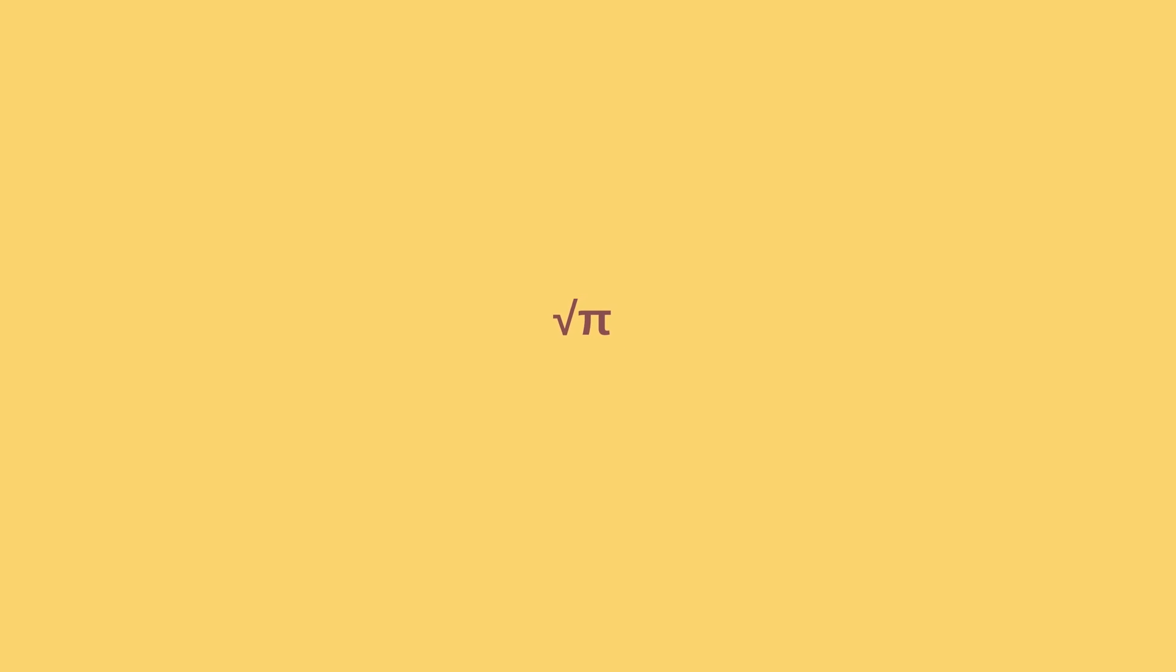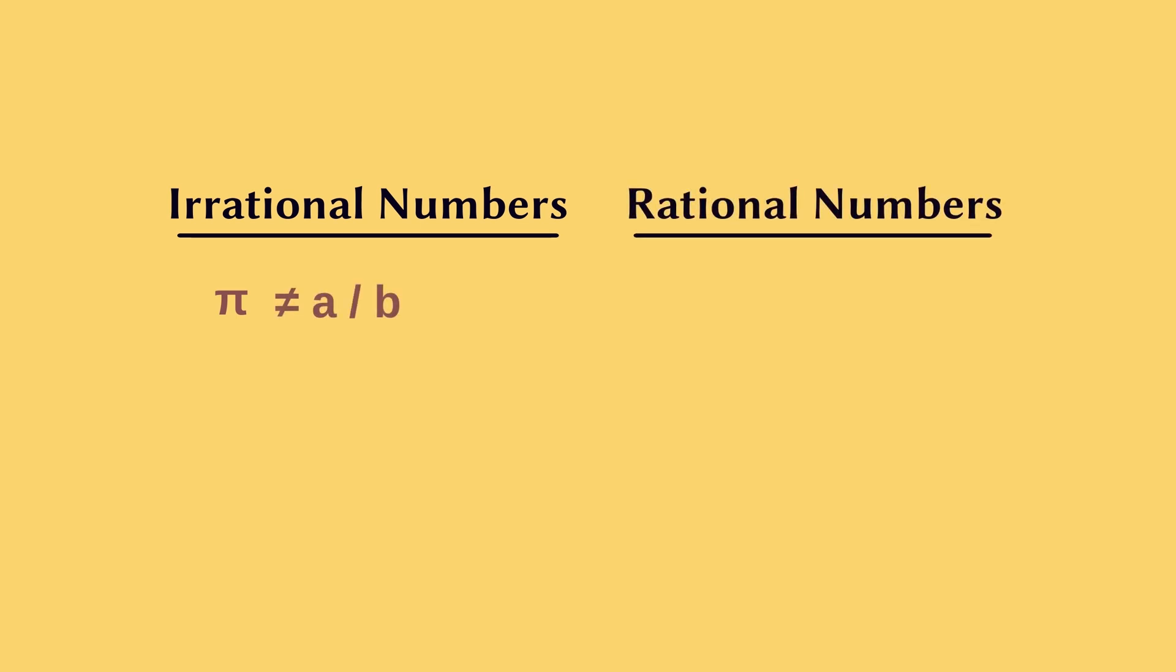Turns out π is a member of a number group called irrational numbers. Irrational numbers are numbers that cannot be expressed as fractions, and rational numbers are numbers that can be expressed as fractions.